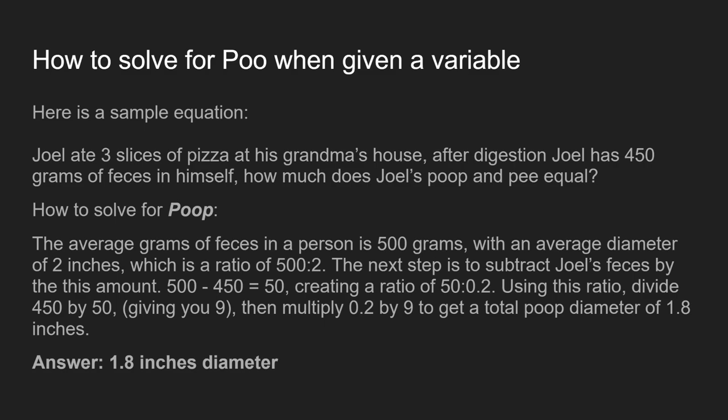Here is a sample equation. Joel ate three slices of pizza at his grandma's house. Don't get tripped up on the location — they're just trying to confuse you. After digestion, Joel has 450 grams of feces. So, we want to start with the average amount of feces. This theory works off of averages. If the average amount of feces is 500 grams with an average diameter of 2 inches, then the ratio is 500 to 2.